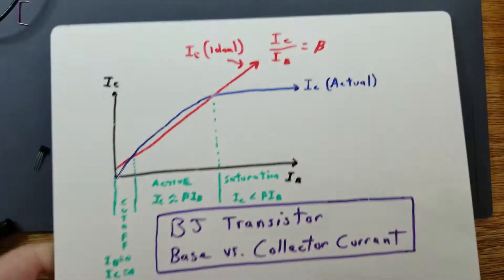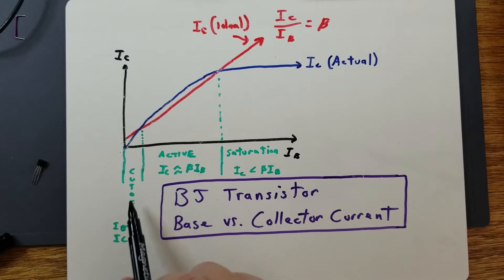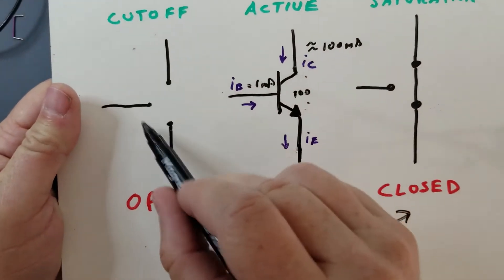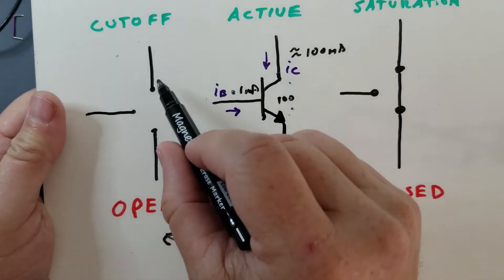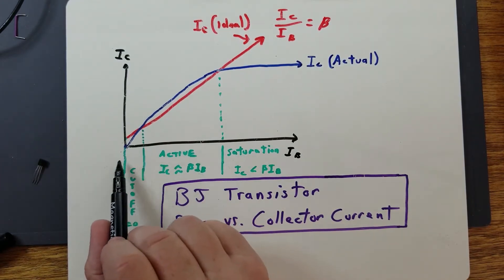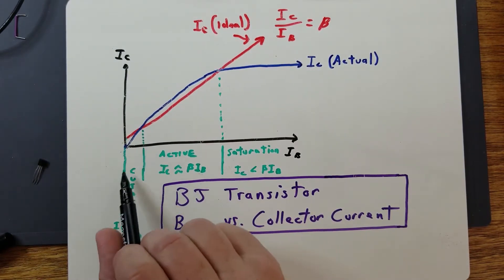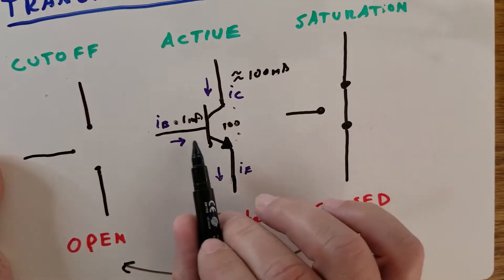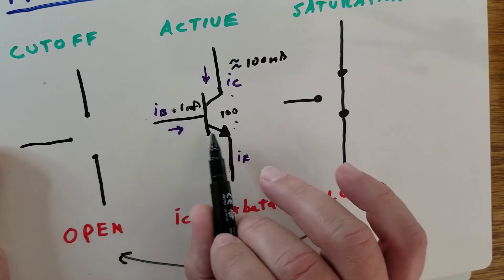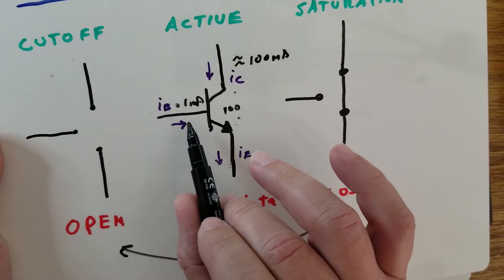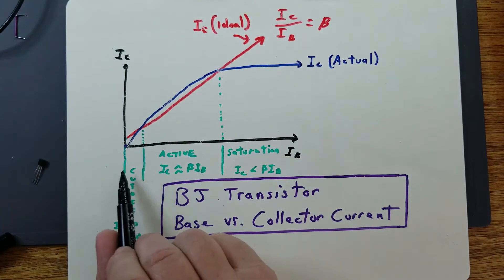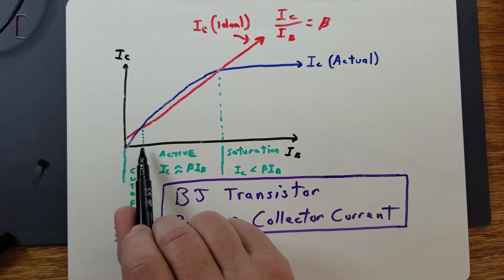The cutoff region is the electrical equivalent of an open switch, where you have no current flowing from the collector to the emitter. This occurs when your base current is zero or very close to zero — you don't have enough base voltage to forward bias this junction, so you have no base current flowing. That is your cutoff region on the graph.